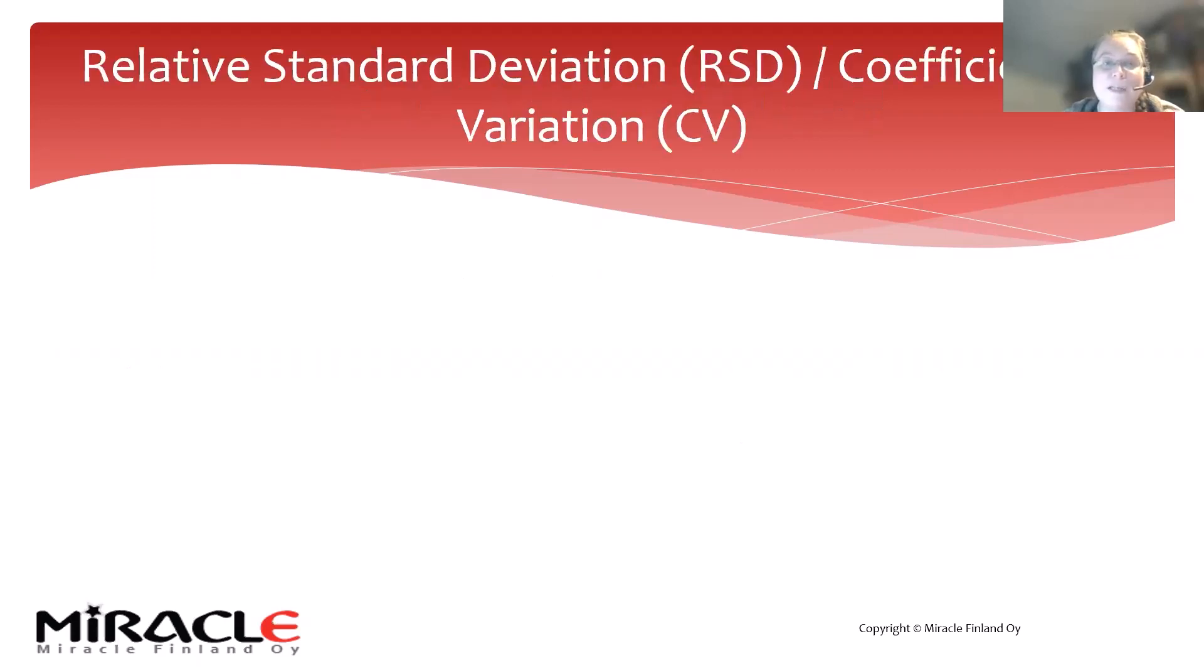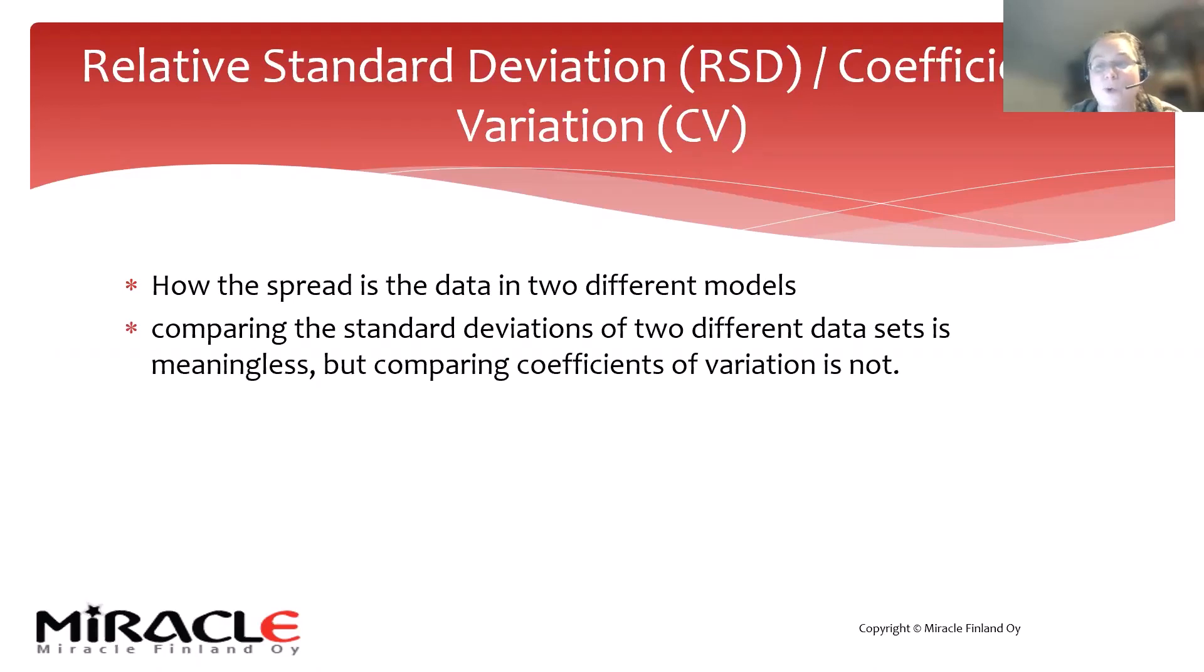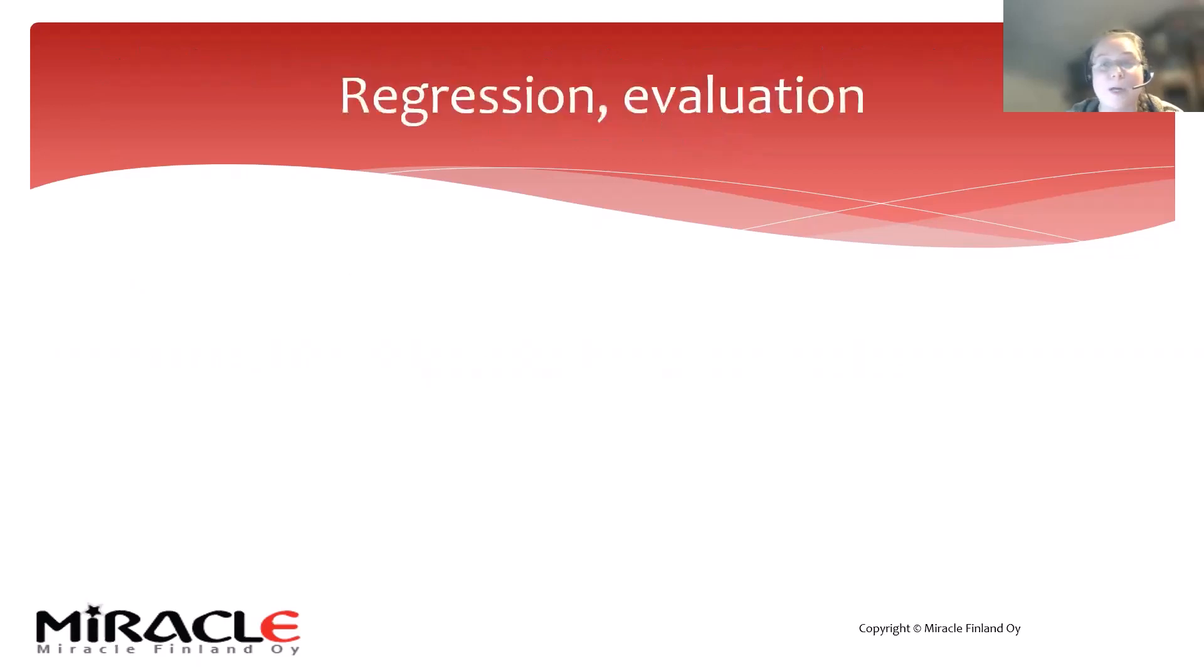A relative standard deviation or coefficient of variation means I'm trying to figure out how the spread is in the data in two different models. I want to compare two different models to each other and understand which one is better. If I just take the standard deviation of two data sets, that doesn't really tell me much. I need to have a coefficient to be able to compare them.